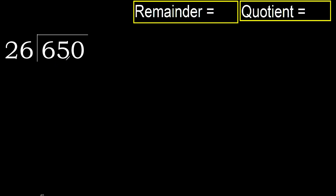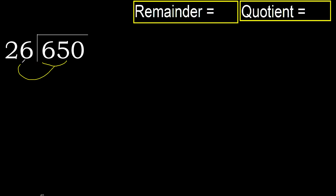650 divided by 26. 6 is less, therefore next. 65 is not less, therefore we work with 65.